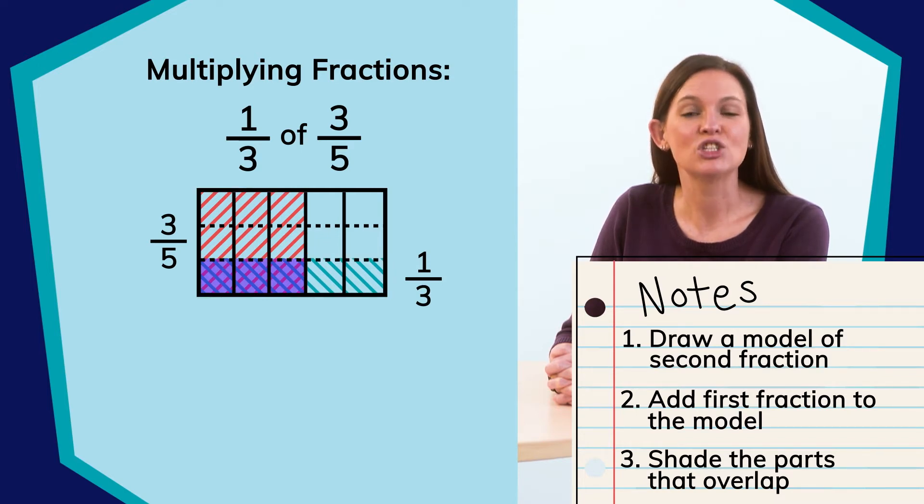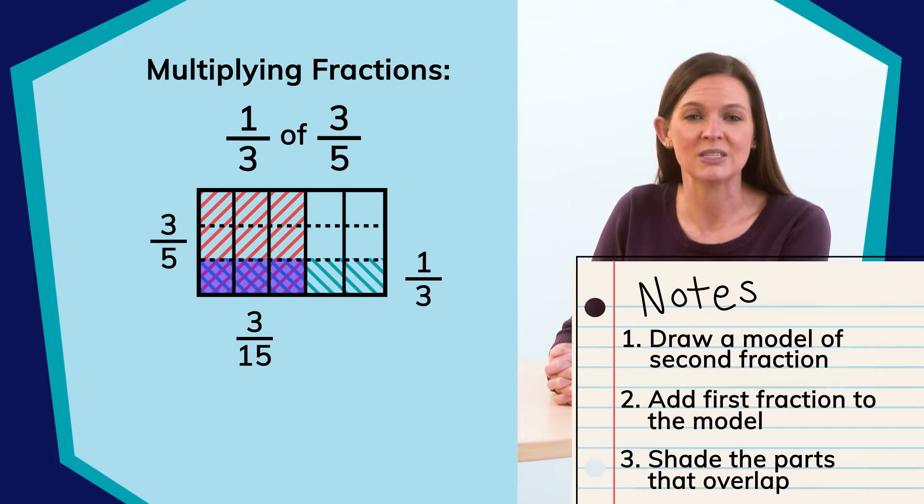Exactly. It shows one-third of three-fifths, or one-third times three-fifths. What fraction of the whole is the shaded region representing? Excellent. Three-fifteenths. Looking at the model, we can see that when we divide it into both fifths and thirds, we created fifteenths. And the overlap of the shading is three of those pieces.